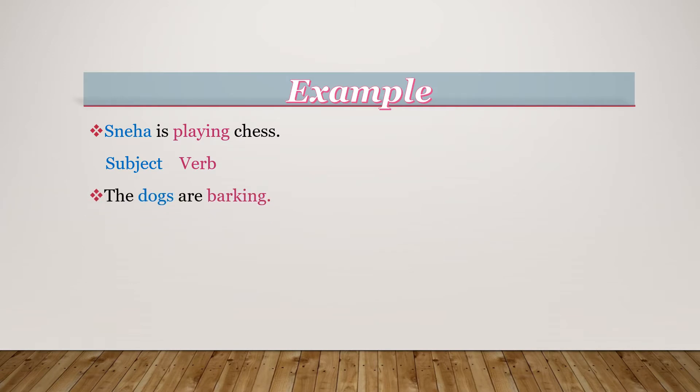Next sentence: The dogs are barking. So, who is doing the action? The dogs. So, dog is the subject. And what are they doing? They are barking. So, barking is the verb.